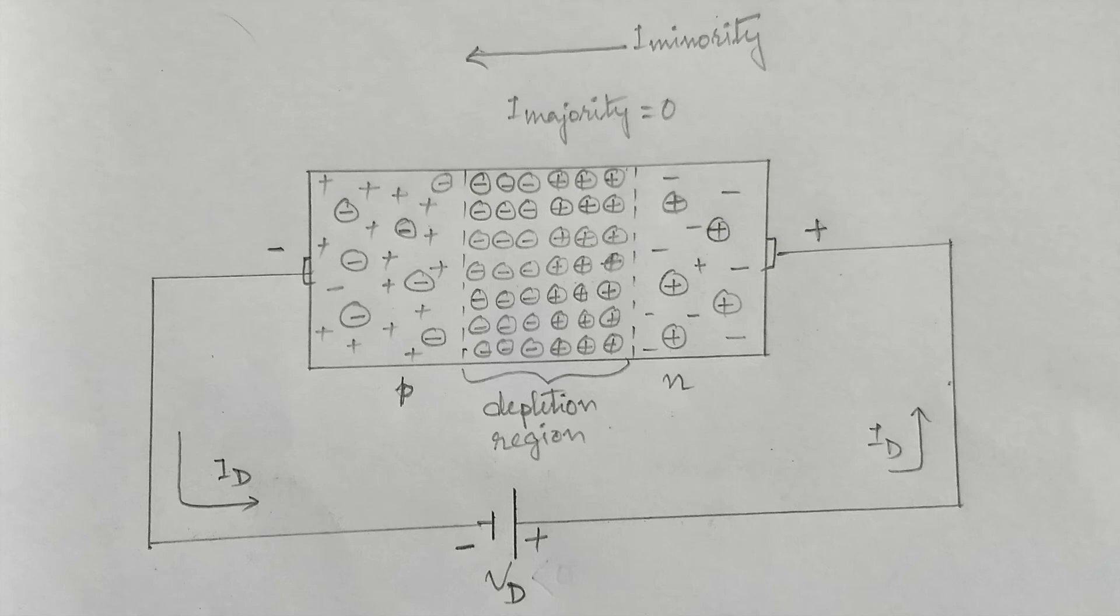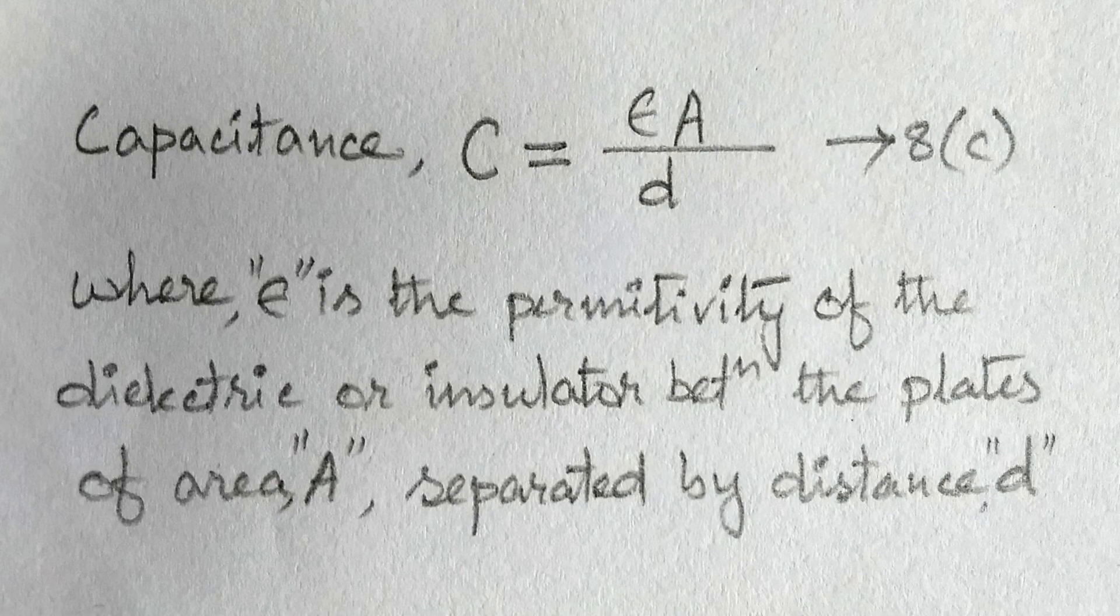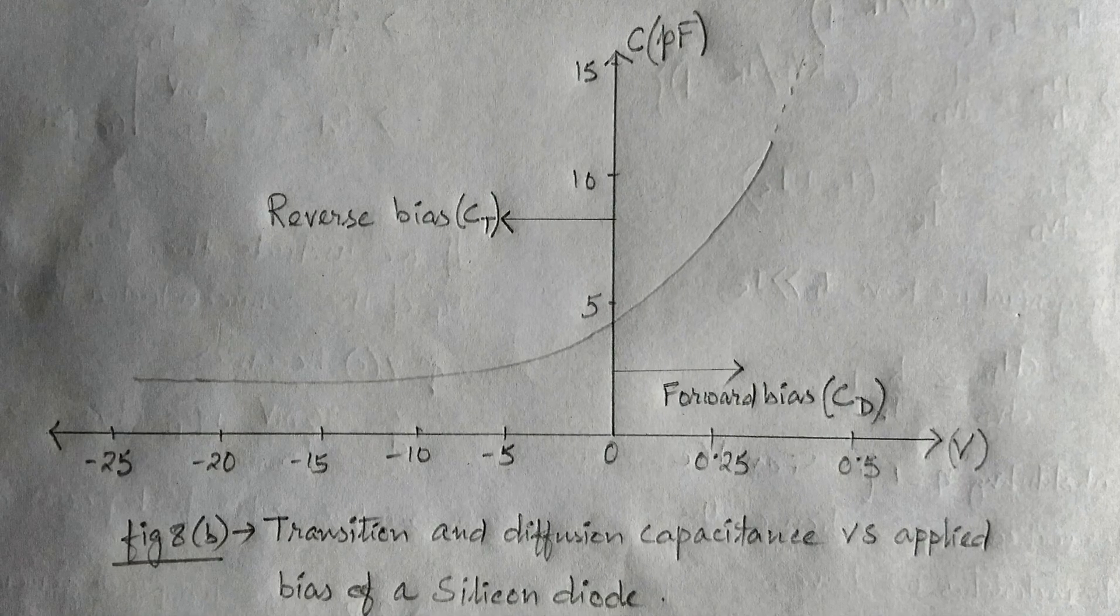Now for the reverse bias case, as we increase the reverse bias potential, the depletion layer width increases. This means the value of small d increases. So from the capacitor equation 8C, we have decrease in capacitance.